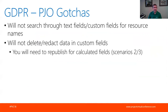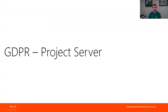Some of the gotchas: we don't search through text fields or custom fields for resource names. So if you're using a custom field on a lookup table and populating that with people's names, we don't detect that as part of this process - your tenant admin or PWA admin would have to take that into account. If that person's asked to be forgotten and they're also an entry in a lookup table, you probably need to attend to that as well, as we don't redact that data. If you've got calculated fields, you'd need to republish for those calculated fields to change if they were based on resource names.